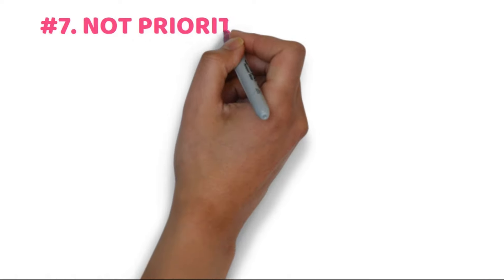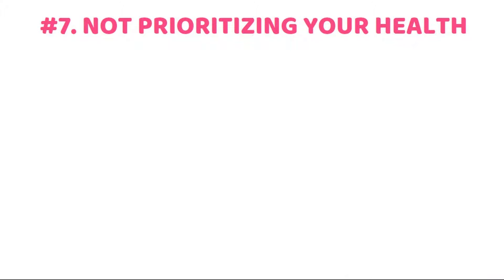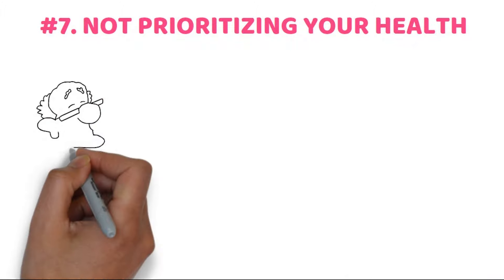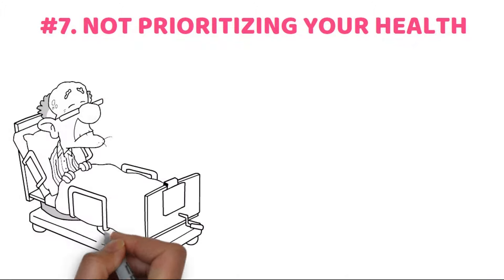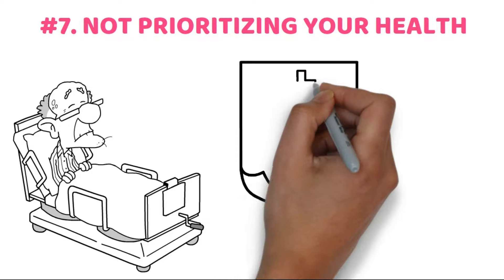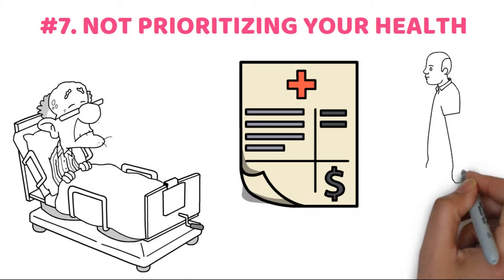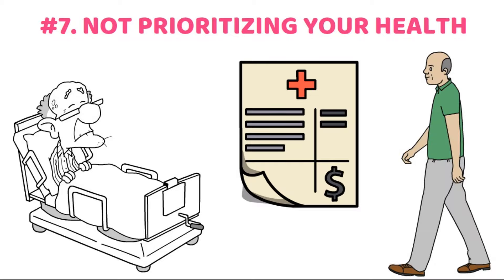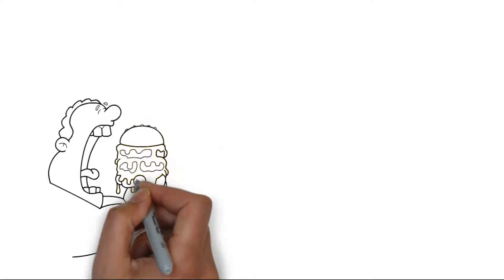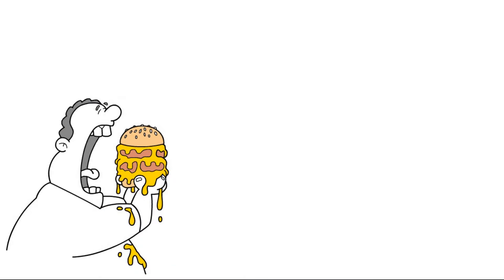Number 7. Not prioritizing your health. As one ages, the likelihood of experiencing health issues tends to increase. And when it comes to health problems, significant expenses often follow. Taking care of your health at a younger age greatly increases your chances of staying healthy, even though some conditions may be unavoidable.